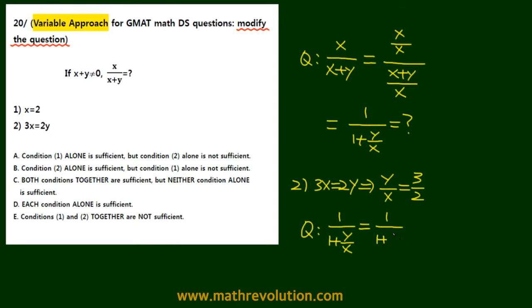1 over 1 plus 3 over 2. And when you multiply 2 on both sides of the fraction, that's 2 over 2 plus 3, which is 2 over 5.